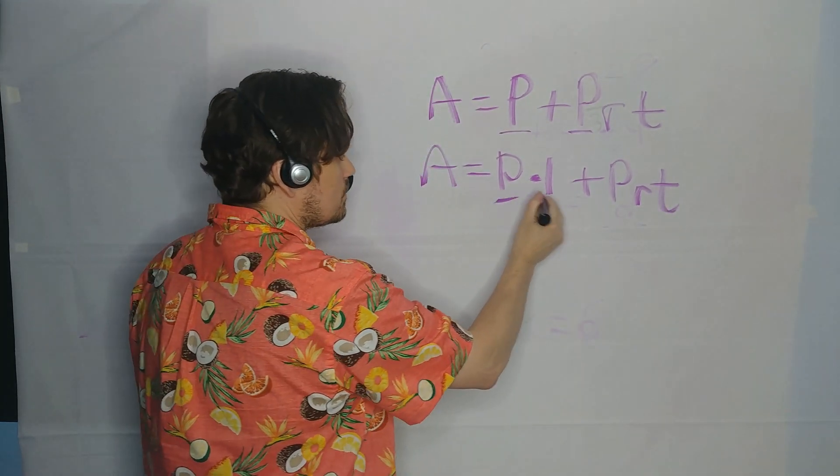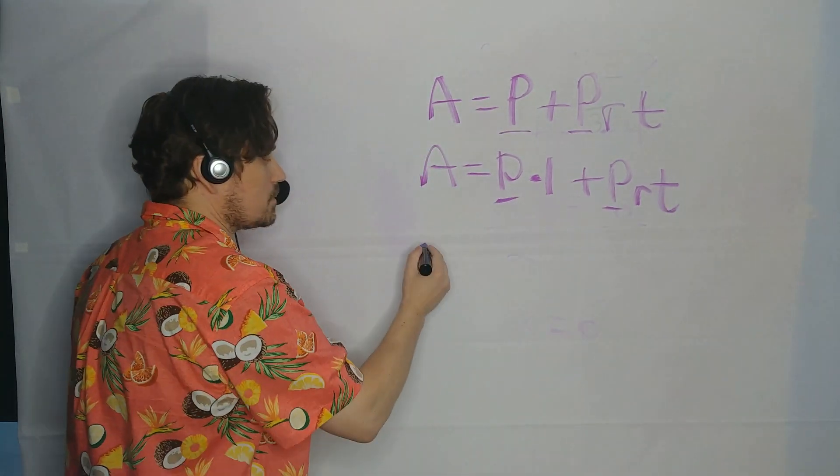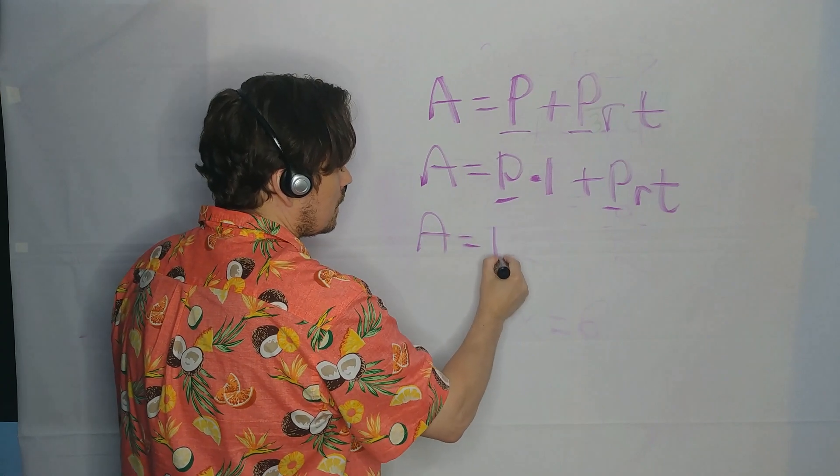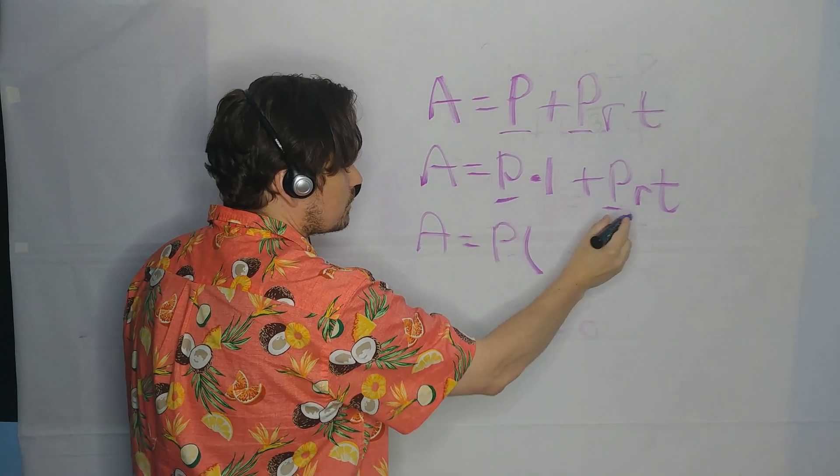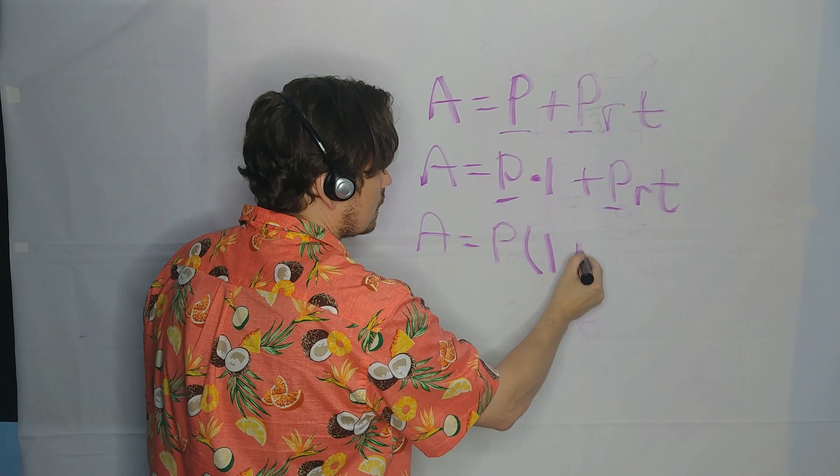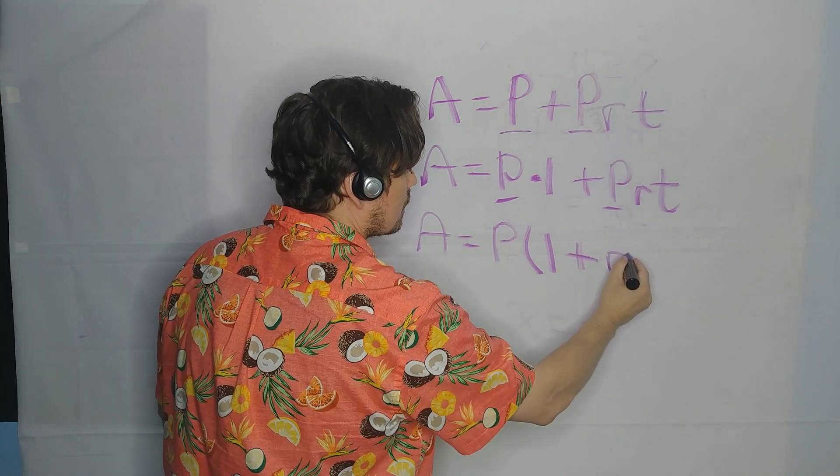So now notice this P and this P can be factored out, so we would have A is equal to P on the outside. What's left within the parentheses then is 1 plus R and then T.